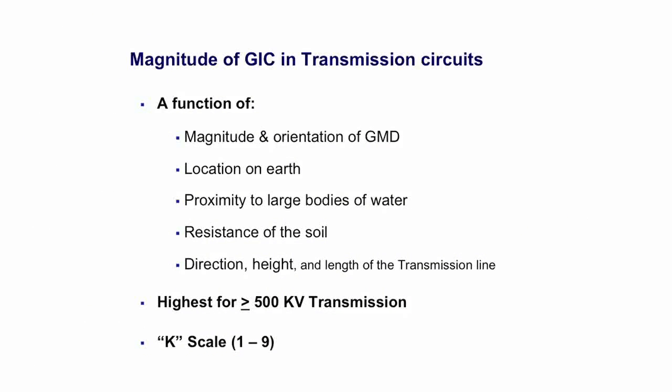The magnitude of the GIC is a function of the magnitude and orientation of the geomagnetic disturbance. It depends on location — mostly in the northern and southern parts of the earth. It was also found that being close to a large body of water, such as an ocean, sea, or large lake, makes the magnitude higher.